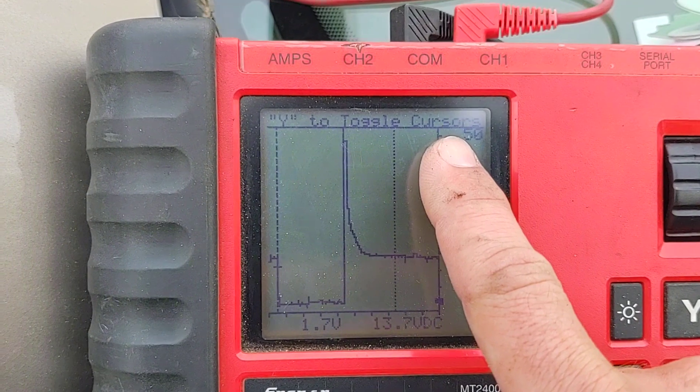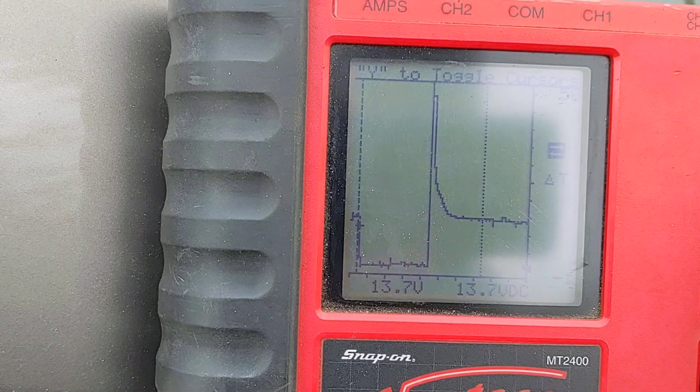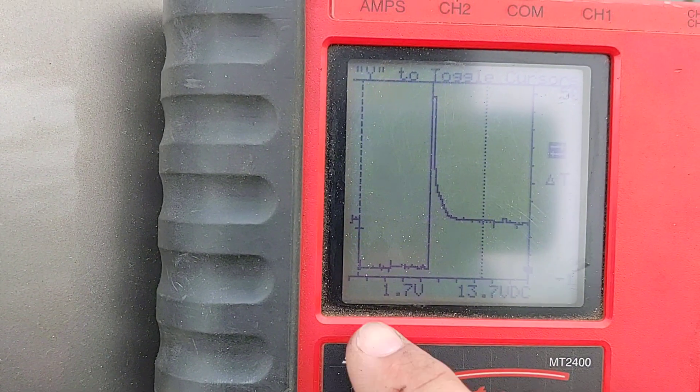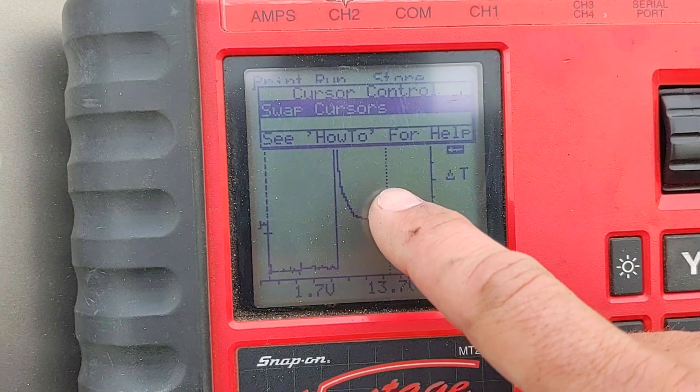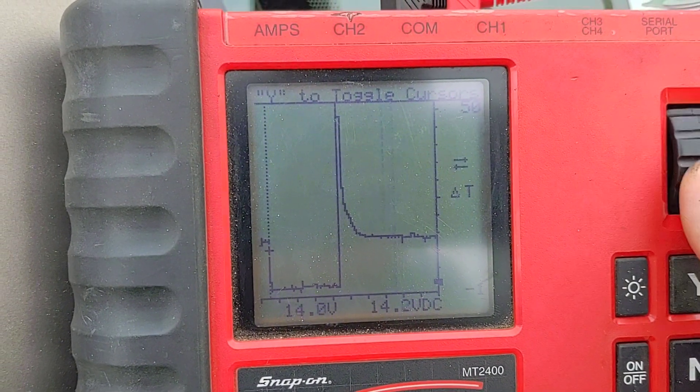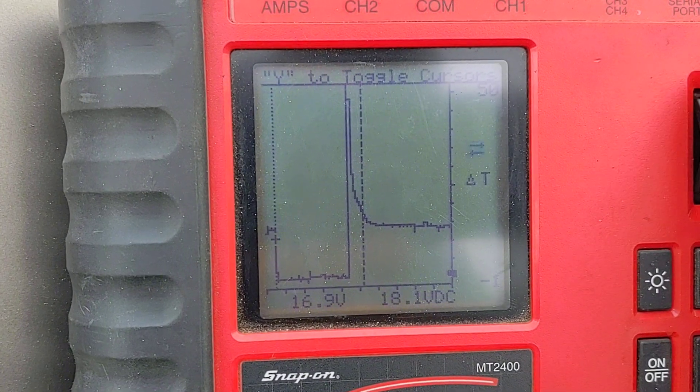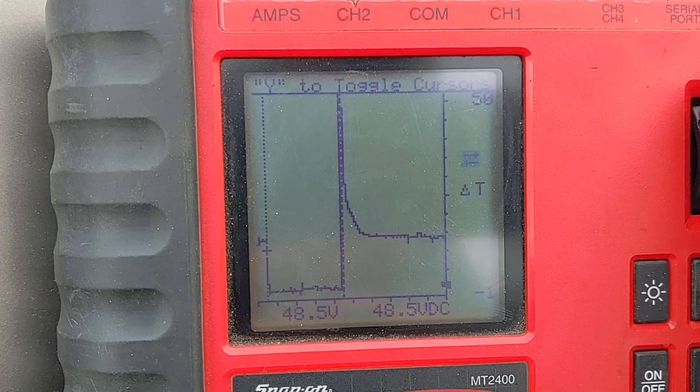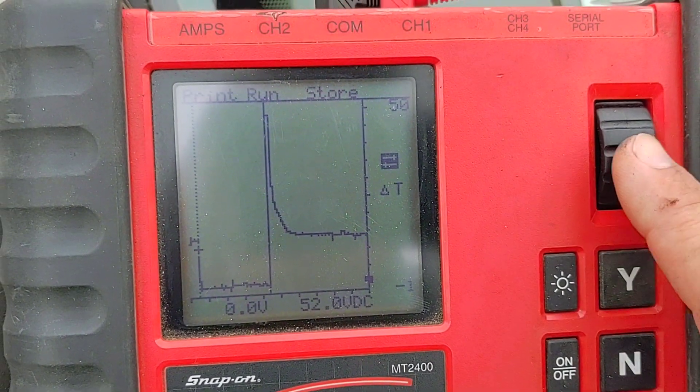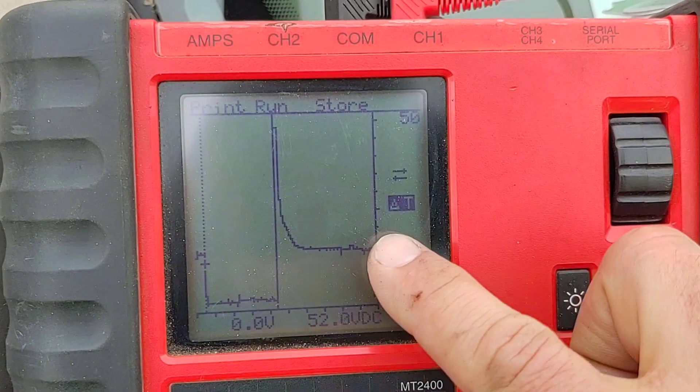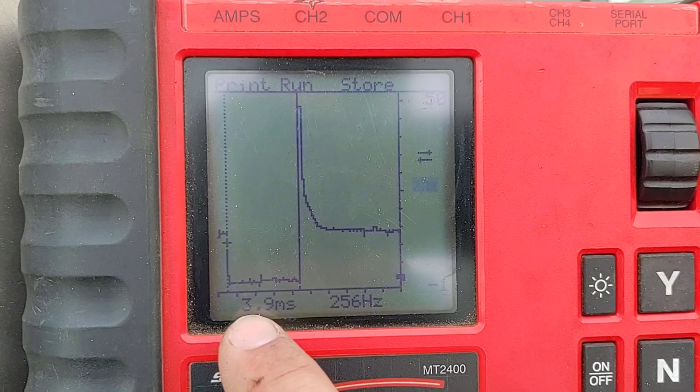There we go. It's telling me why to toggle my cursors. So if I move my little scroll wheel, this dotted line over here is a cursor. I'm going to place that right there where the injector turned on. I'm now going to press Y, which is going to put me in charge of this cursor. You can see me wiggling it back and forth there. I'm going to scroll that over here. Right there. I'm going to hit no for a moment so that I can go back into scrolling. Right there. Delta T, or the difference in time, 3.9 milliseconds.